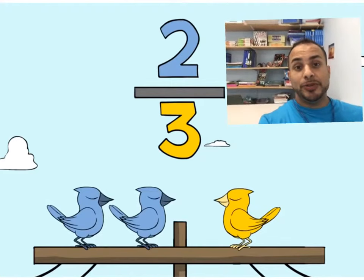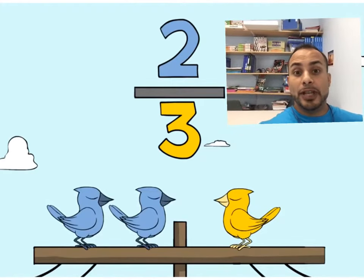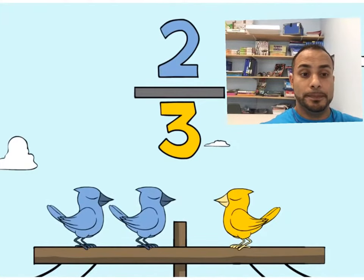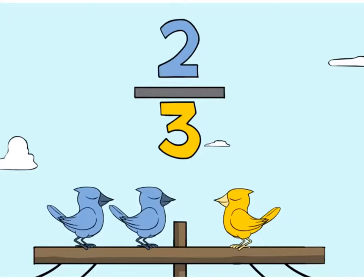Now let's say you're walking down the street and you look up at the light post and you see three birds — two blue ones and a yellow one. We can say that out of the entire group of birds, which is the entire number, the whole number is three. We can say that two of them are blue. So when we take our whole amount of birds, we write that as the bottom number, which we call the denominator. The denominator is our whole. So we see that this is our whole entire group of birds, and it consists of three birds, so we write three.